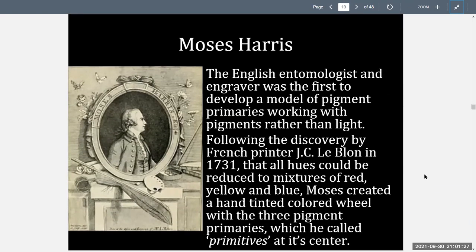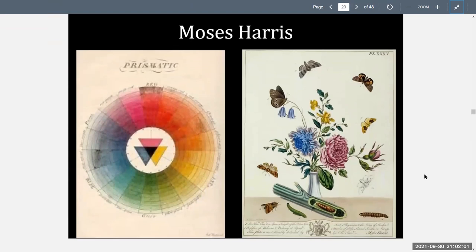The next theorist is Moses Harris, an English entomologist — someone who studies insects — and engraver. He was the first to develop a model of pigment primaries, working with pigments rather than light. Following the discovery by French printer J.C. Leblanc in 1731 that all hues could be reduced to a mixture of red, yellow, and blue, Moses created a hand-tinted color wheel with three pigment primaries, which he called primitives, at its center.